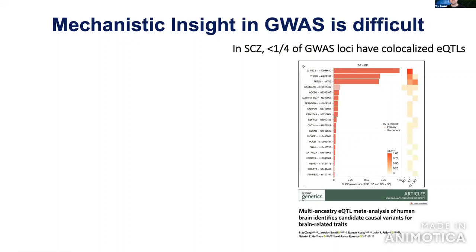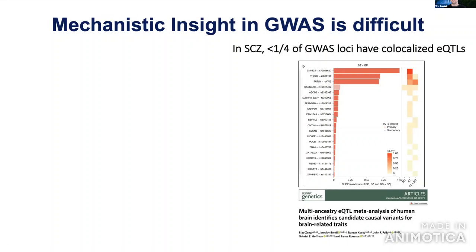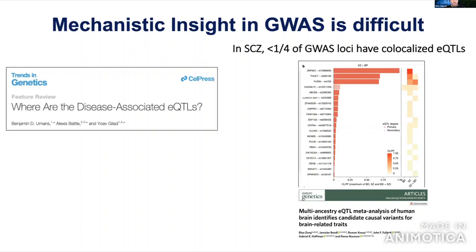This has led many in the field to question where the disease-associated QTLs are — instead of 'missing heritability,' it's now really 'missing mechanism.' We have all these loci but don't know what they're doing in mechanistic detail. Three major explanations have been proposed: better cell-type specificity using single-cell sequencing, issues with developmental timing, and questions about the appropriate molecular readout.